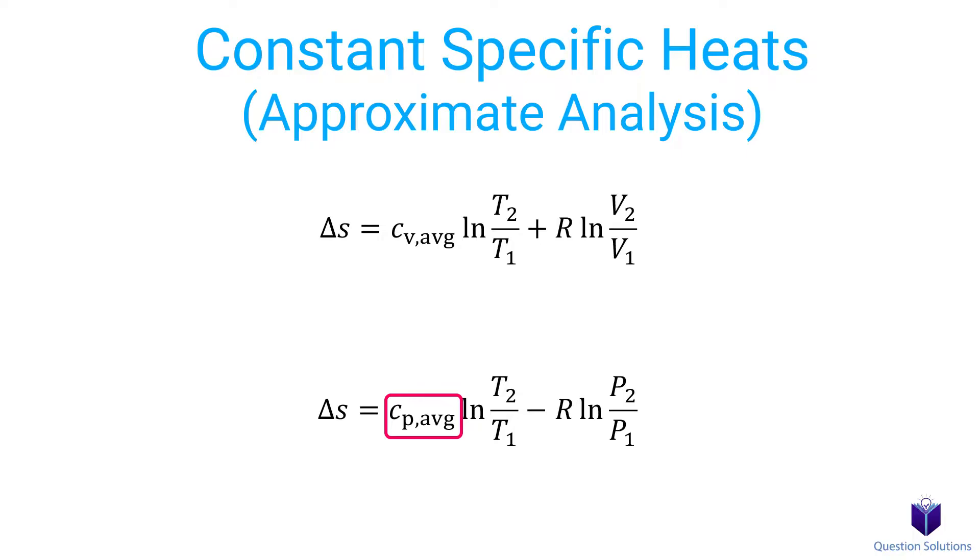It might be a bit confusing because in previous chapters, CV was used when volume was constant, and CP was used when pressure was constant. Here, keep in mind, the volume can be different and the pressure can be different. Regardless, if you use this equation, CV must be used. And if you use this equation, CP must be used.